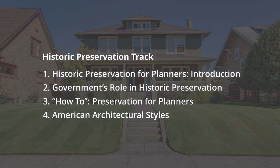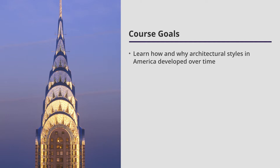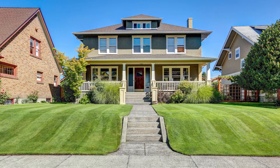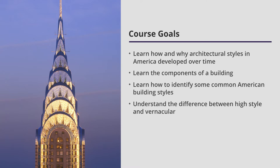In this final course, I have set out course goals for us to achieve as we move through the material. The first goal is to understand how and why architectural styles in America developed over time the way that they did. The next goal is to begin to understand the components of a building. The third goal is to begin learning how to identify some common American building styles. The fourth goal is to understand the difference between high style and vernacular architecture through examples.